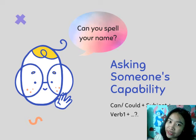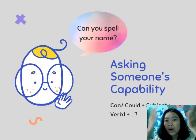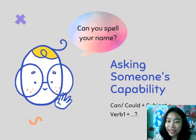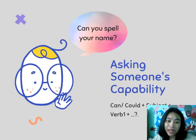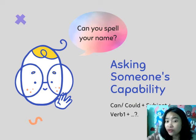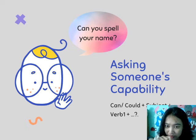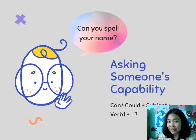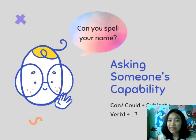Let's look at how to ask someone's capability. We use the pattern: can/could + subject + verb 1 + ...? Don't forget the question mark. For example: 'Can you spell your name?' — 'Yes, I can. My name is Fina, F-I-N-A.' Something like that.